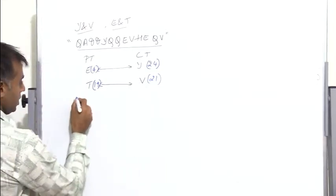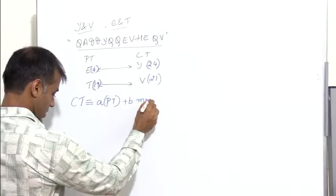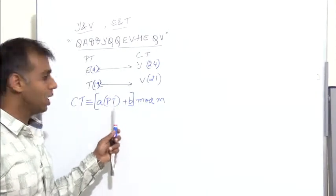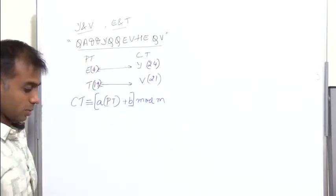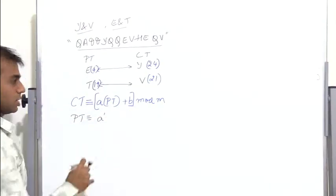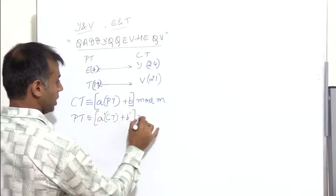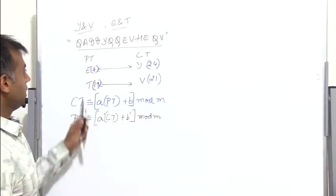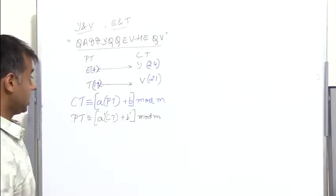The expression for ciphertext is: c = a * p + b in mod m. But here we have the ciphertext and need to find the plaintext, so the modified expression is: plaintext p ≡ a' * ciphertext + b' operating in mod m. There are two unknowns, a' and b', and we have two relations.